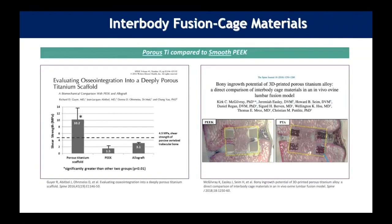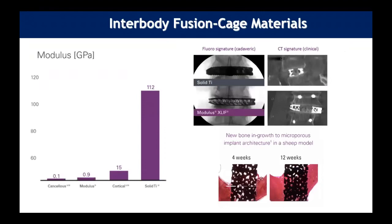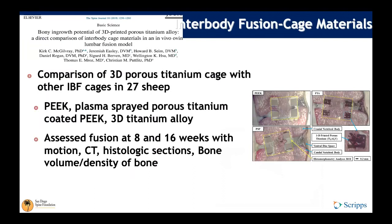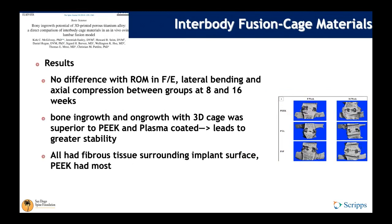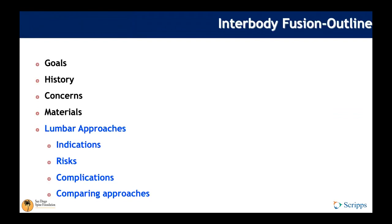A study on 3D-printed technology compared it to PEEK, plasma-sprayed PEEK, and porous-coated titanium, looking at fusion at 8 and 16 weeks in a rabbit model. There was no difference in flexion-extension, lateral bending, or axial compression, but bone ingrowth and ongrowth with the 3D-printed cage was superior to PEEK and plasma coating, leading to greater implant stability. PEEK implants had the most fibrous tissue surrounding the implant surface.